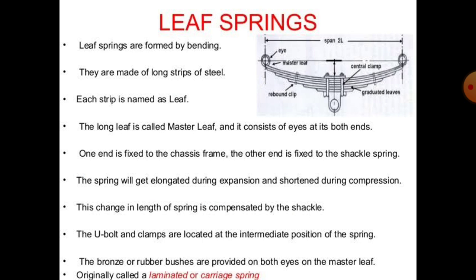The longest leaf is called the master leaf and it consists of an eye at both ends. In the diagram, the master leaf is the longest leaf and has eyes at both ends. One end of the master leaf is fixed to the chassis frame, and the other end is fixed to the shackle spring. The spring will get elongated during expansion and shortened during compression when road shocks hit the vehicle.